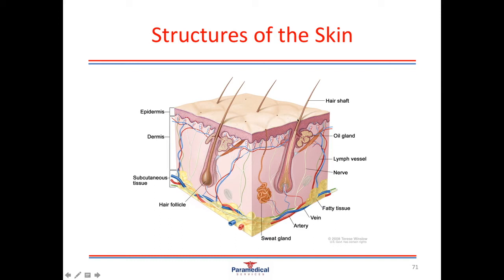We also have sweat glands, which are involved in our thermoregulation — they secrete fluids onto our skin to be evaporated off. We also have different receptors within the tissues, and these receptors help us to feel all different types of sensations.